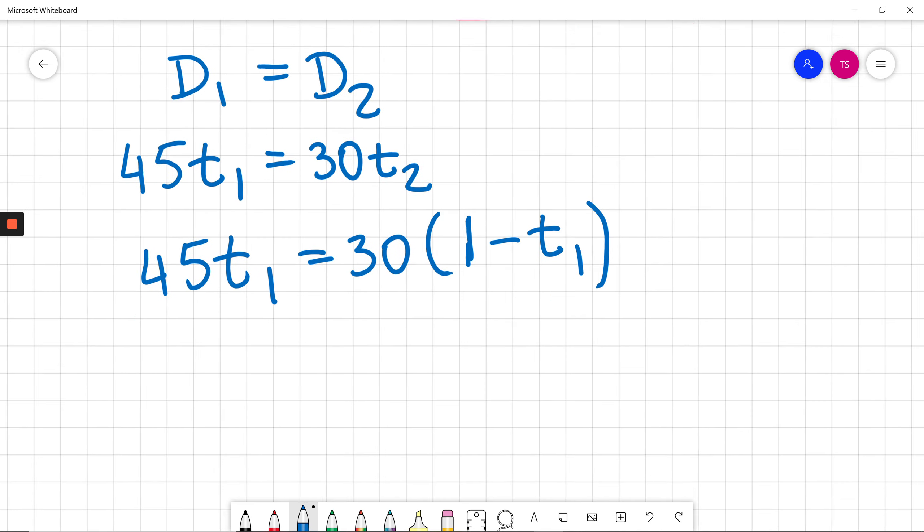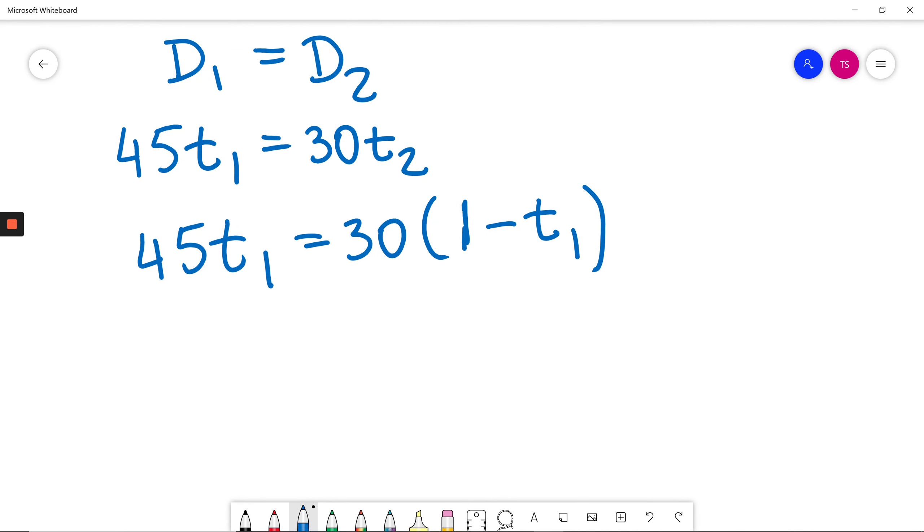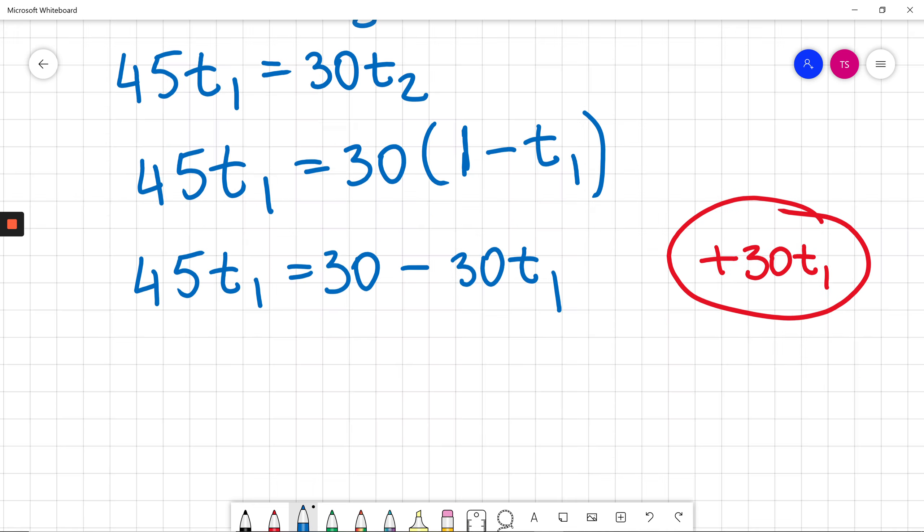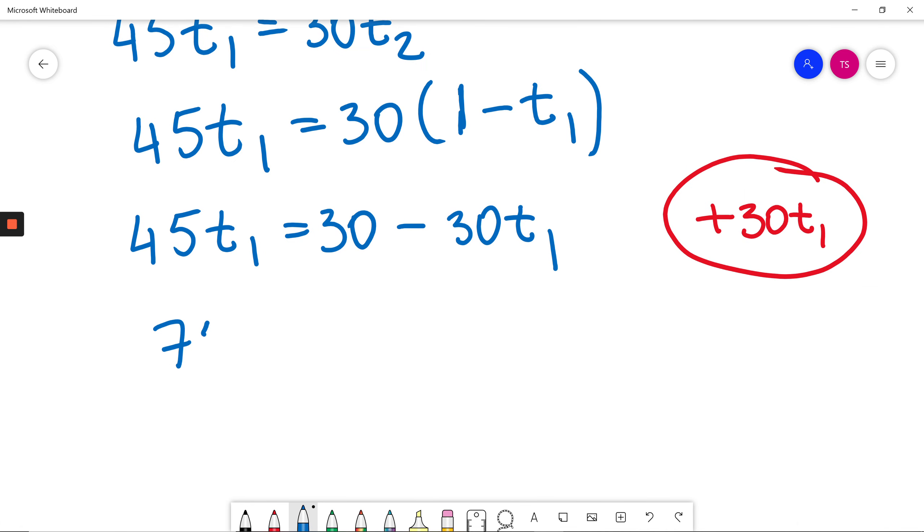So 45 T1 is equal to 30 times, I will substitute T2 is equal to 1 minus T1. Now, the next step, I will just multiply bracket, so 45 T1 will be equal to 30 minus 30 T1. At this moment, I will add plus 30 T1 on both sides,